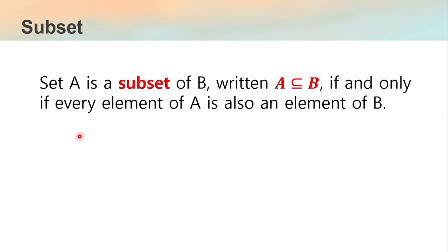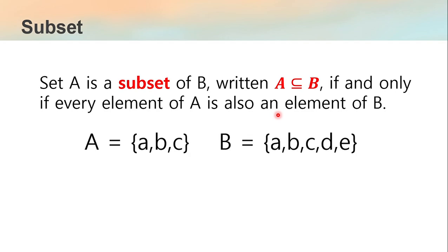Now we have what we call a subset. Set A is a subset of B if and only if every element of A is also an element of B. For example, set A contains {A, B, C} and set B contains {A, B, C, D, E}. So A is a subset of B since all elements of A — A, B, and C — are found in set B.